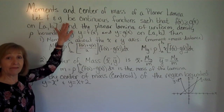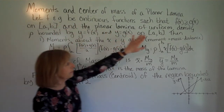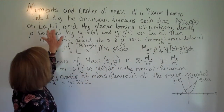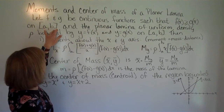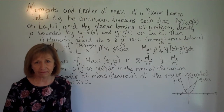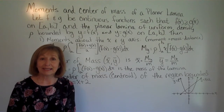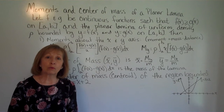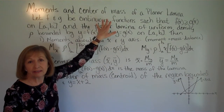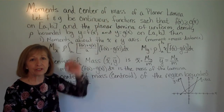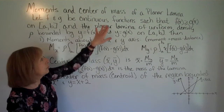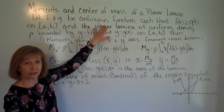Let f and g be continuous functions such that f(x) is greater than or equal to g(x) on a closed interval. When looking at a specific example, you can't be tied to which is called f(x) and which is g(x) — whichever function is higher in the region is f(x), and whichever is lower is g(x) in this definition.